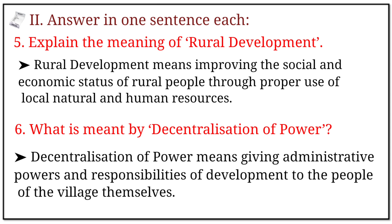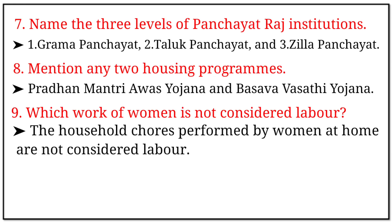Question 2: Answer the following in one sentence each. 5. Explain the meaning of rural development. Answer: Rural development means improving the social and economic status of rural people through proper use of local natural and human resources. 6. What is meant by decentralization of power? Answer: Decentralization of power means giving administrative powers and responsibilities of development to the people of the village themselves.